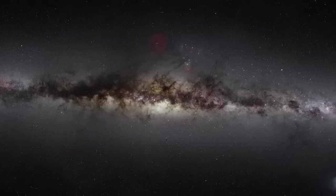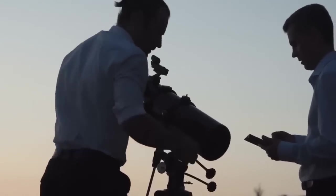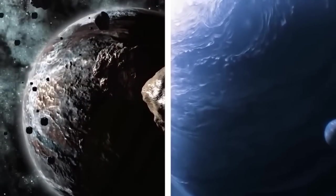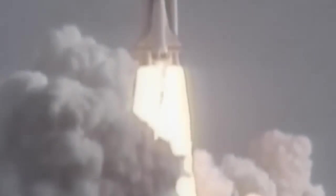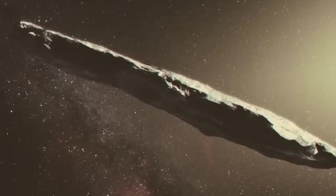An object unlike any other, named Oumuamua, was detected by the Pan-STARRS-1 telescope in Hawaii. This visitor from beyond our solar system moved too fast to be bound by the sun's gravity, indicating its interstellar origin.